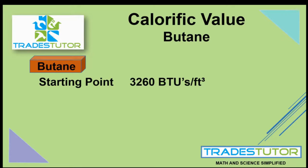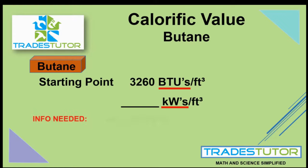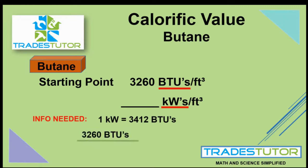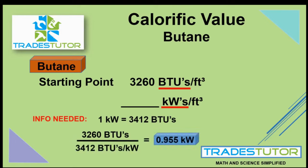We'll start with the value of 3,220, and the volume stays the same. Then we're going to go through the conversion using 3,412. We'll take the number of BTUs we have and divide it by the number we need for a kilowatt.